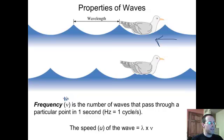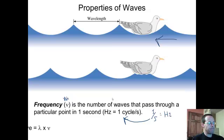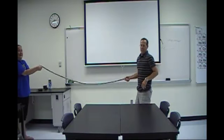Per second, or one over s, is the same as a hertz, which is the unit for frequency. If the waves go by this bird at one per second, it would be one hertz. If it was 30 times per second, it would be 30 hertz.